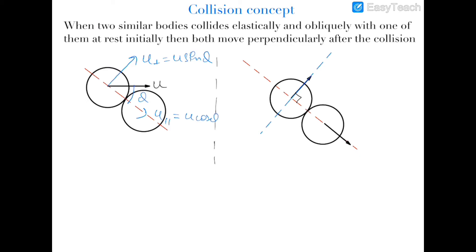From concept number one: if two bodies collide elastically and their masses are the same, their velocities along the line of impact get interchanged. Before collision, the second object was at rest and the first object was moving with velocity u_parallel along the line of impact. So after collision their velocities on the line of impact will be interchanged, and there will be no effect on the perpendicular component of the first object's velocity, since no impulse acts perpendicular to the line of impact.